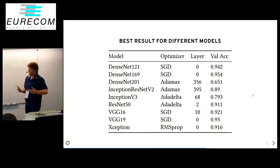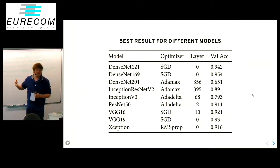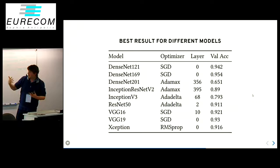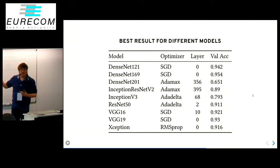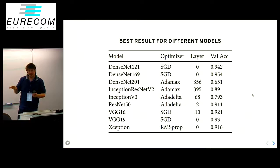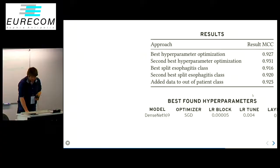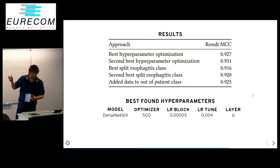From running the hyperparameter optimization with different models, we actually have several models with really high validation accuracy. This would seem to indicate that the model and its configuration don't matter that much — it's actually the dataset itself that may need more work. We need more images, removal of artifacts, and possibly post-processing; I did not do any pre-processing.